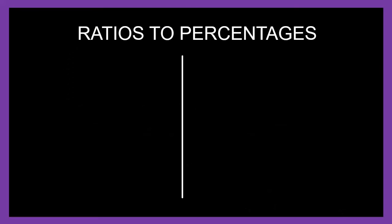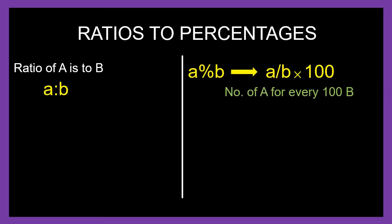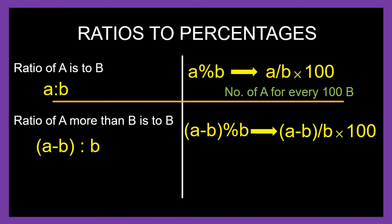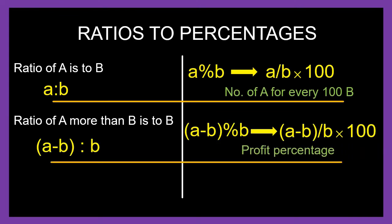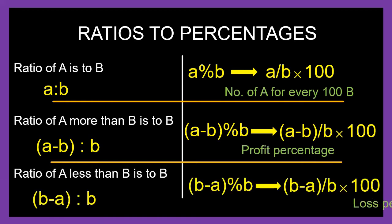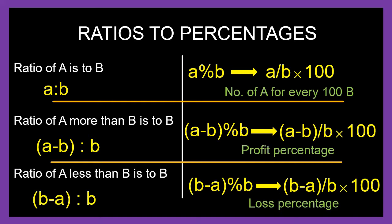There are three typical types of ratios expressed as percentages. Type 1: A is to B, expressed as percentage, becomes A by B into 100. Type 2: A minus B is to B, expressed as percentage, becomes (A minus B) divided by B into 100 — common application being profit percentage. Type 3: B minus A is to B, expressed as percentage, becomes (B minus A) divided by B into 100 — common application being loss percentage.